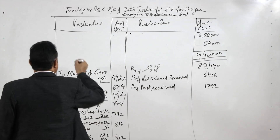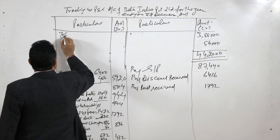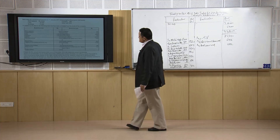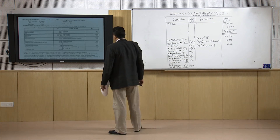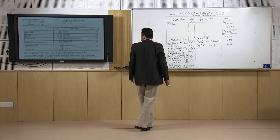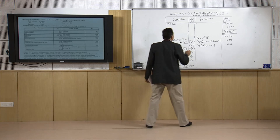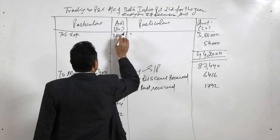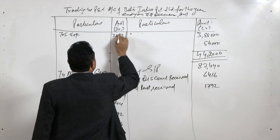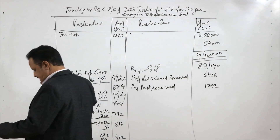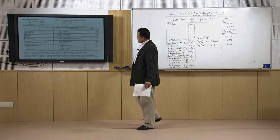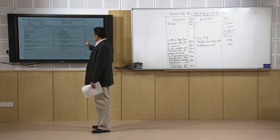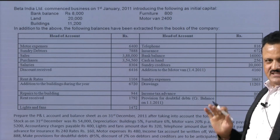We are continuing on the upper part. Next is sundry expenses — sundry expenses here are 3,863 rupees. Now, is there any other item left? Drawings, no. Income tax, not yet.